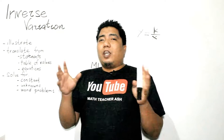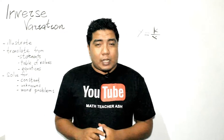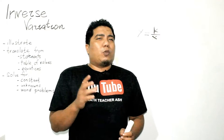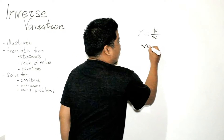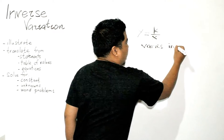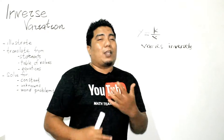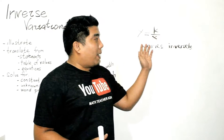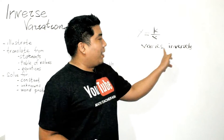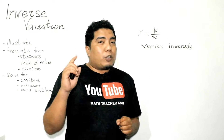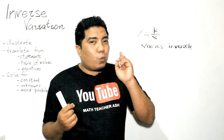How do we translate inverse variation? Inverse variation can be expressed in statements, table of values, and equations. For statements, what you need to observe are the terms 'varies inversely' or 'inversely proportional.' The equation y = k/x is read as 'y varies inversely as x,' meaning when x increases, y decreases, or when x decreases, y increases.